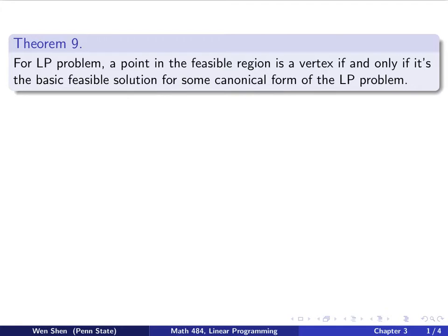So we will try to put all things together. We start the video with a theorem, theorem number 9. The theorem says, for the LP problem, a point in the feasible region is a vertex if and only if it's the basic feasible solution for some canonical form of the LP problem.